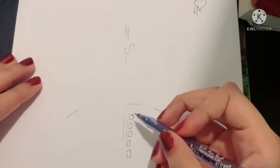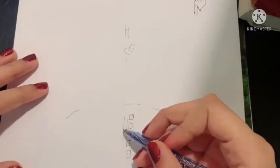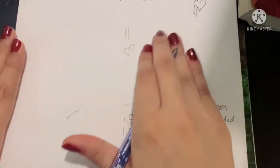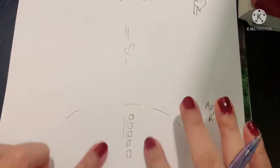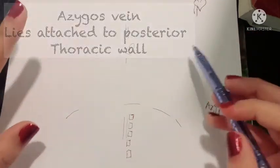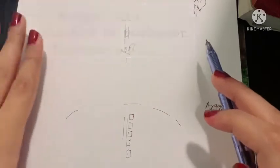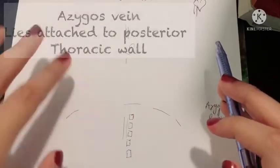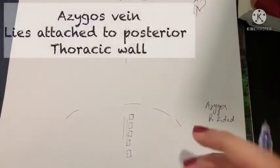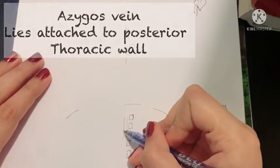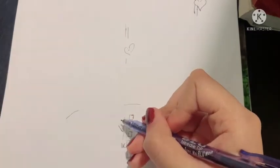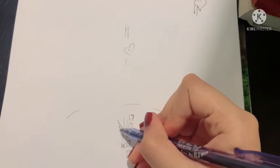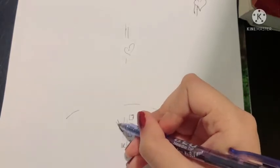Let's begin with the origin of the azygous vein. The main function of the azygous vein is to drain the thoracic wall, and in addition it also drains the upper lumbar region. The main point is to get all the veins of the thoracic wall into the azygous vein. The azygous vein is formed from the lumbar azygous, which is a branch of the inferior vena cava.